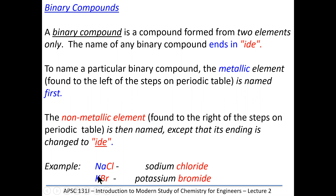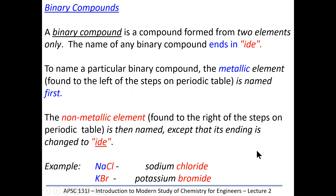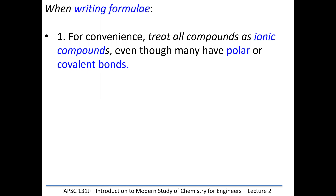KBr is going to be called potassium bromide. Whenever the element only has a single oxidation state, there's no need to state the oxidation number in the name, because there is only one way the potassium combines. There's only one potassium bromide, so we don't have to distinguish it from a variant. For convenience, we're going to treat all ionic compounds — even those with polar or covalent bonds — as ionic compounds for our naming conventions.